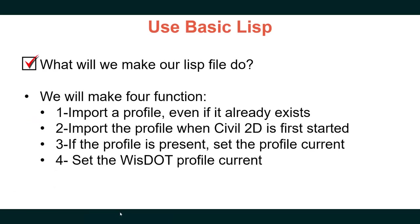We will make four functions in our LISP file: (1) import a profile even if it already exists; (2) import the profile when Civil 3D is first started; (3) if the profile is present, set the profile current; and (4) set the WisDOT profile current. Functions 3 and 4 will be used on buttons placed on the ribbon to switch between our profile and the WisDOT profile. Loading and running the LISP will be two separate steps.